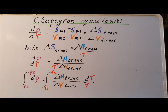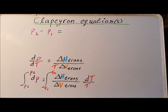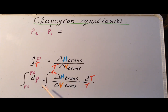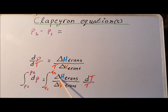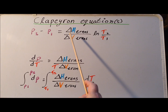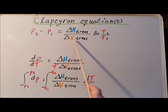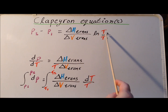We multiply each side by dT and integrate: on the left-hand side from P1 to P2, and on the right-hand side from T1 to T2, where T1 and T2 are close together. The integral of dP between P1 and P2 becomes simply P2 minus P1. On the right-hand side, delta H of transition divided by delta V of transition can be assumed nearly constant and pulled in front of the integral sign, leaving the integral from T1 to T2 of dT over T, which gives delta H of transition over delta V of transition times the natural log of T2 divided by T1.